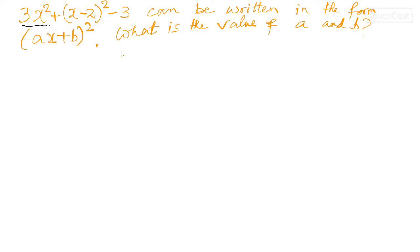3x squared plus x minus 2 squared minus 3 can be written in the form ax plus b squared. What's the value of a and b? Apparently it seems quite a difficult problem, but let's look at this. This is the given expression and what I can do is simply work part by part to solve the problem.